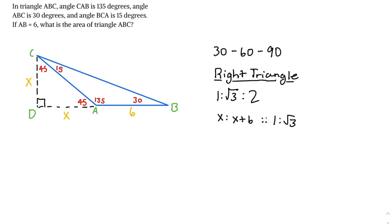To solve for x, we must balance the ratios. To do that, we multiply by root 3 on the x side and by 1 on the x plus 6 side. This gives us x root 3 is equal to x plus 6. This means that x root 3 minus x is equal to 6. We can take out x common to get x times the square root of 3 minus 1 is equal to 6.